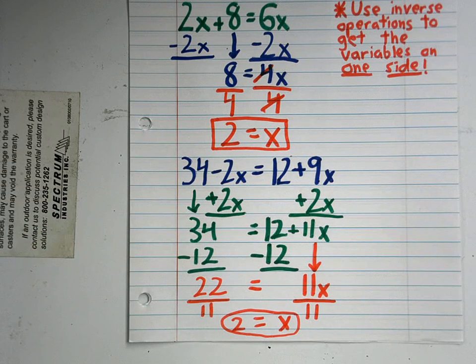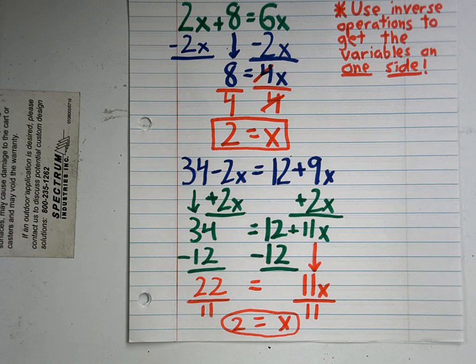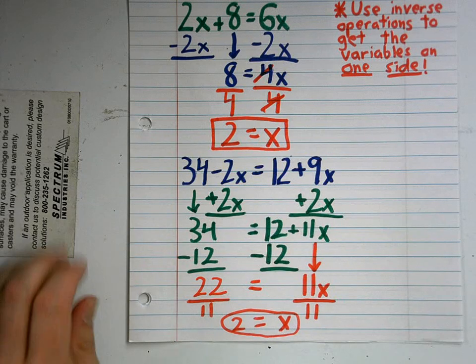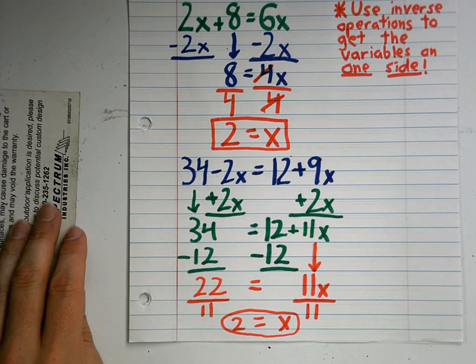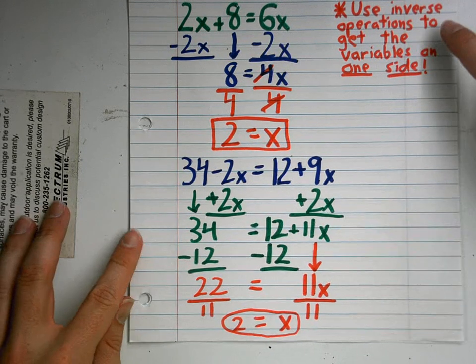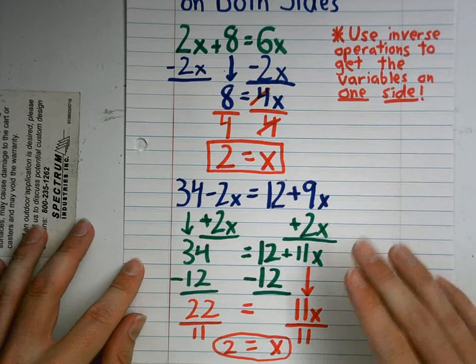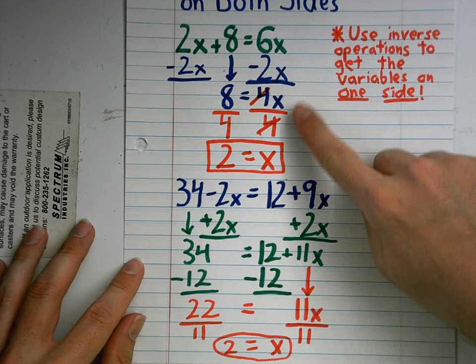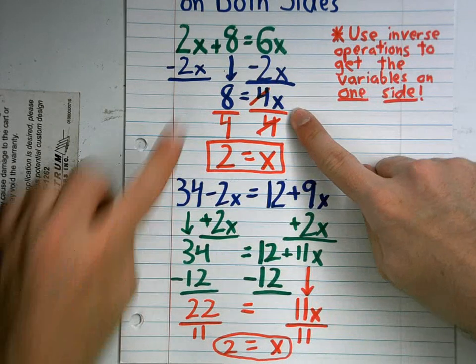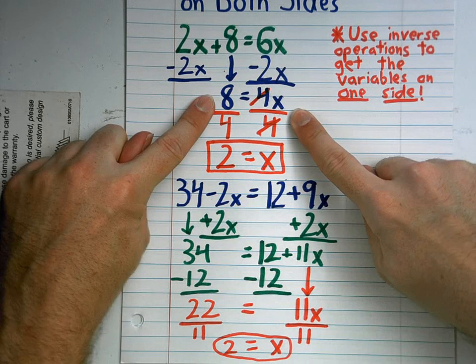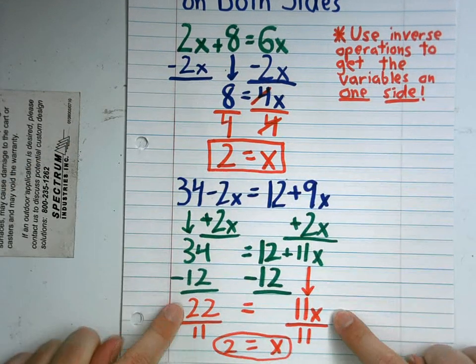So I can have variables on both sides and constants on both sides. Either way, I'm going to use inverse operations to get the variables on one side and the constants on the other.